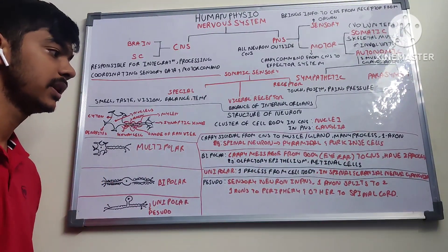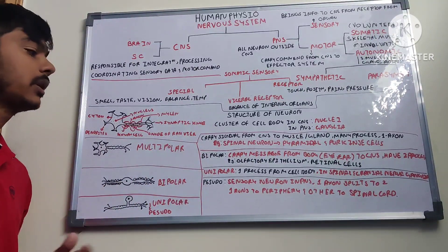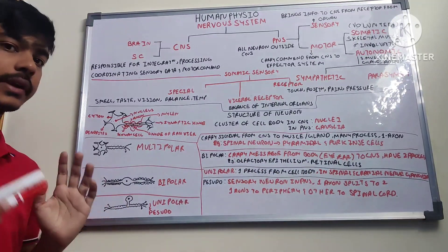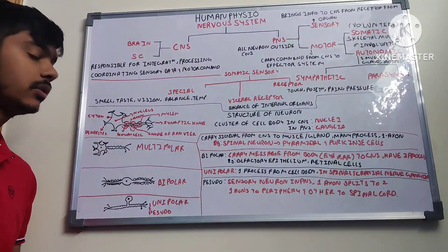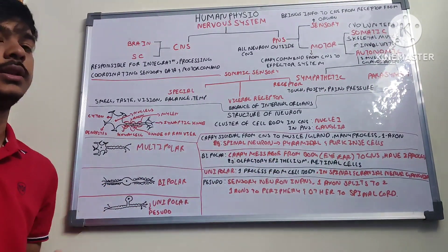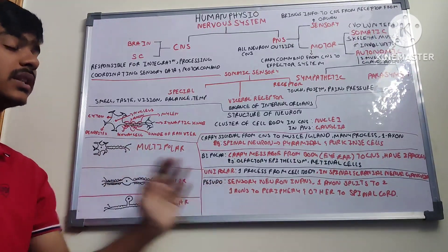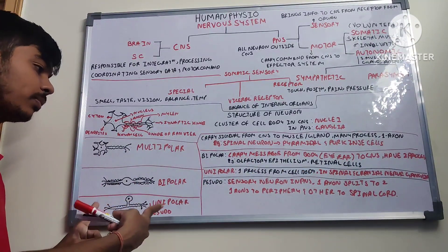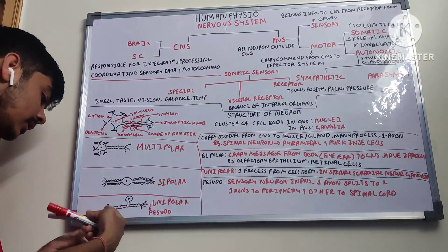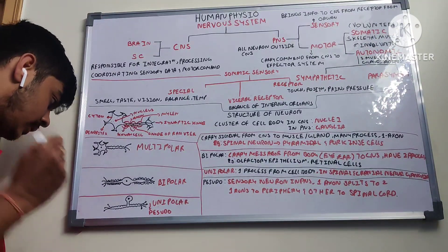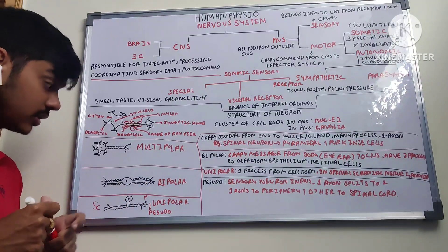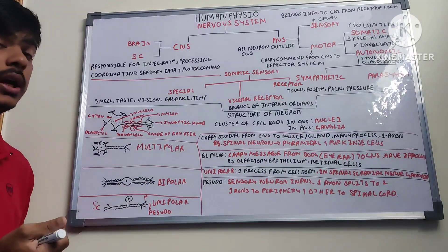The unipolar neuron has one process from the cell body and is present mainly in spinal and cranial nerve ganglia. The pseudo-unipolar neuron is a sensory neuron in the peripheral nervous system. It has one axon which splits into two parts: one runs to the peripheral part and the other runs to the spinal cord.